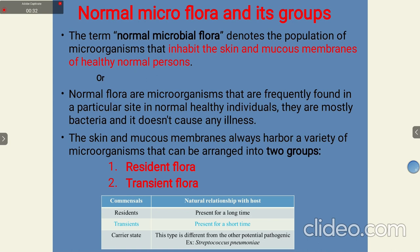The skin and mucous membranes always harbor a variety of microorganisms that can be arranged into two groups: resident flora and transient flora. As the name suggests, resident means they are permanently residing there, while transient means they are residing there for a short period of time. They can also be categorized into four categories, but majorly they are of two types: resident and transient, which have a natural relationship with our host.